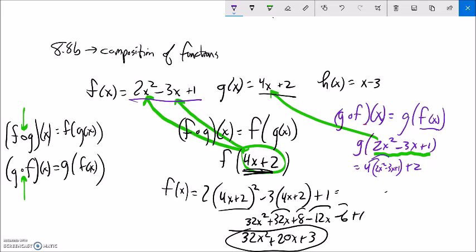And so now I'll simplify it. Distribute that 4 into there. 8x squared minus 12x plus 4 plus 2. Combine some like terms. And I get 8x squared minus 12x plus 6. So that's what g of f would be. And notice they're different. They're not the same. So the equivalency isn't there. Order is important.